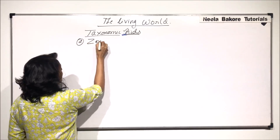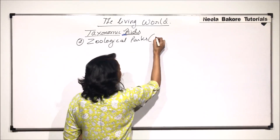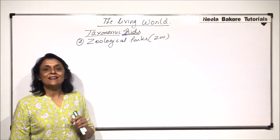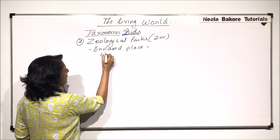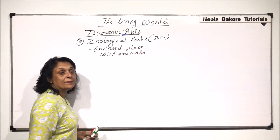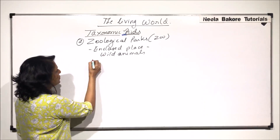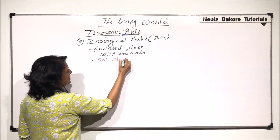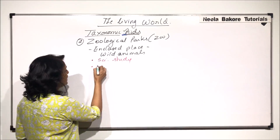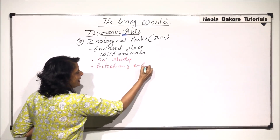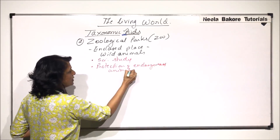The second taxonomic aid we are talking about is zoological parks or zoological gardens, commonly known as a zoo. It is an enclosed place where normally wild animals are placed. One purpose is scientific study of these animals. Another very important purpose is protection of endangered animals, which can be placed here.